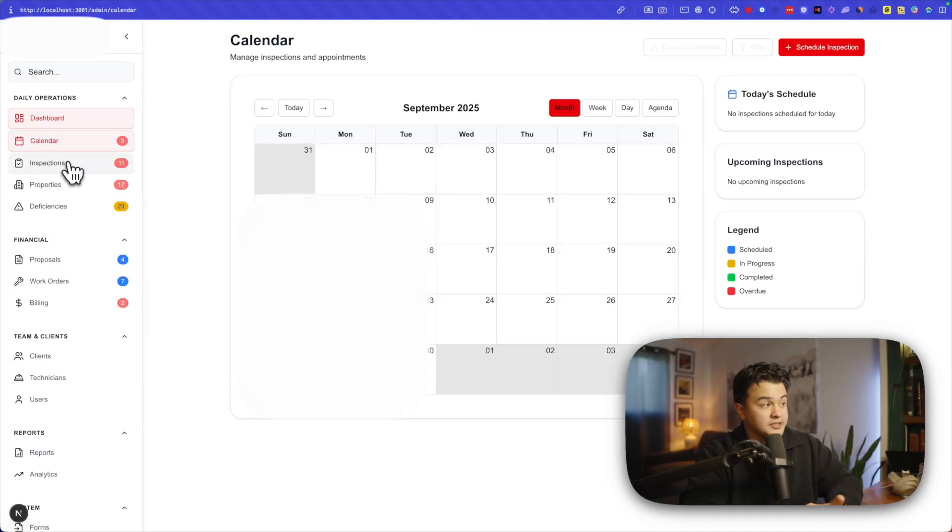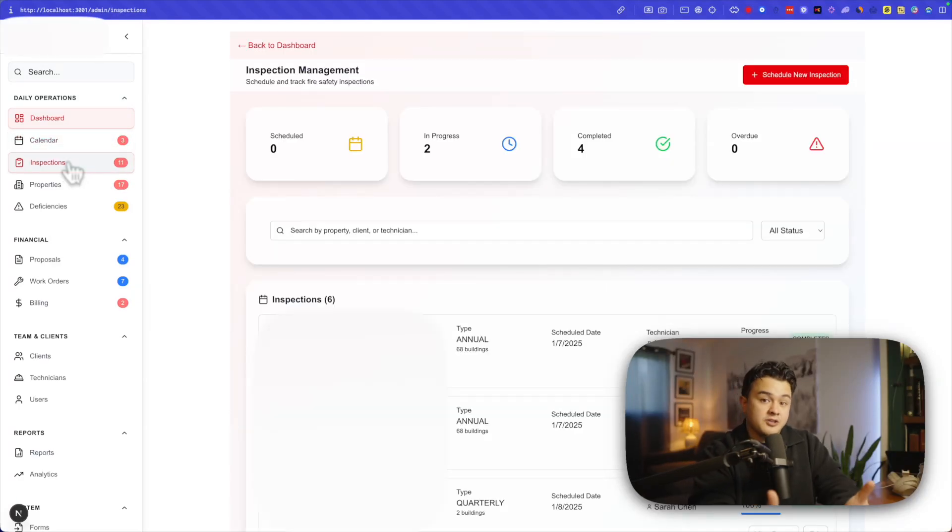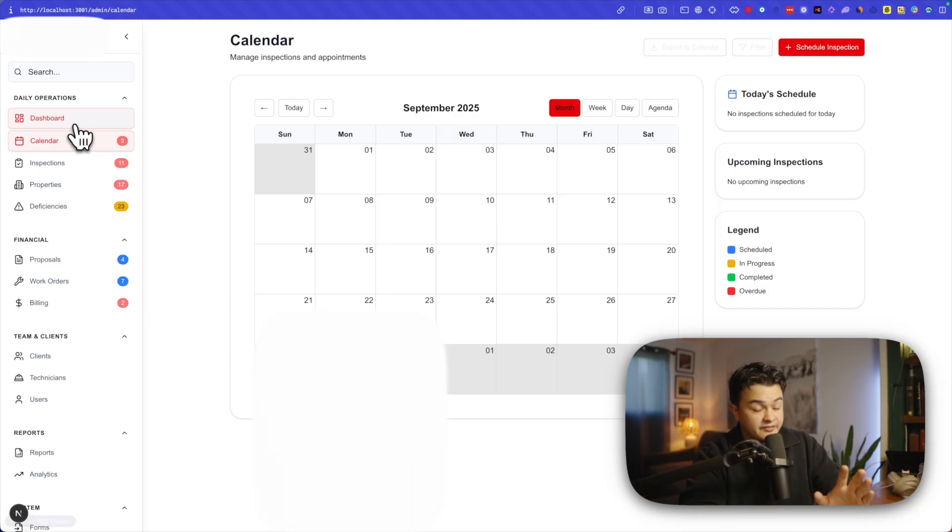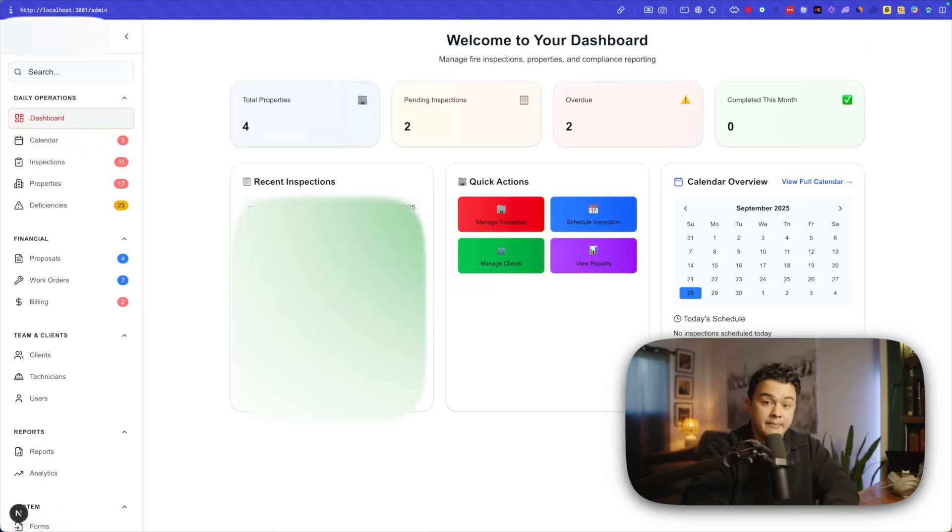This is a custom application I just built out for one of my clients, a fire inspection company. They paid me $15,000 plus a monthly management fee to build out this entire thing. I did zero coding whatsoever. I'm not a developer, I'm not technical. I use AI, more specifically Claude Code, to build out the entire thing.